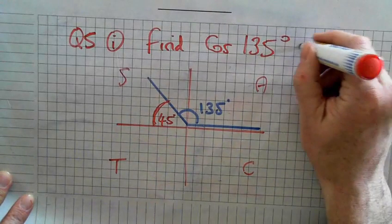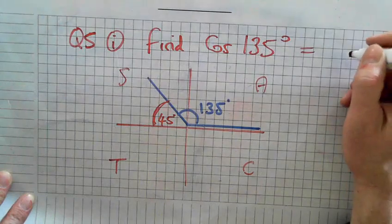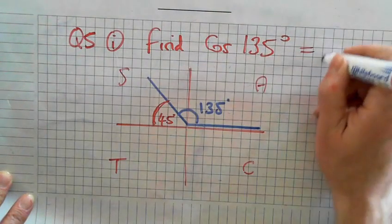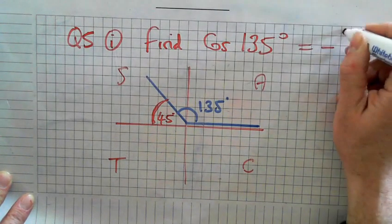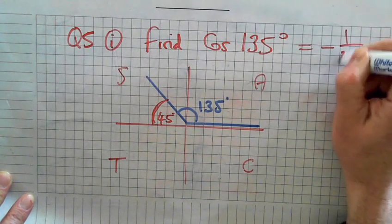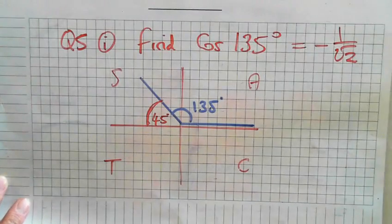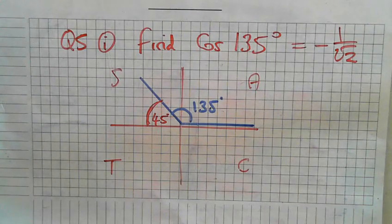So the cos of 135 is negative. Negative 1 over root 2. That's the answer in the third form.